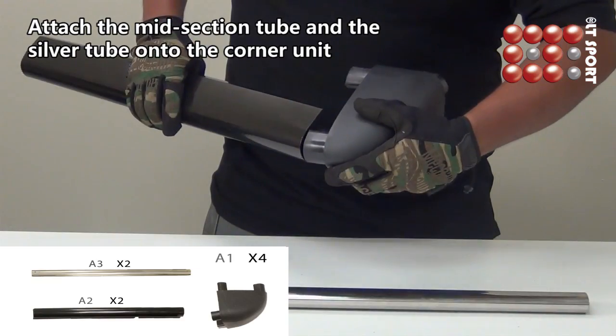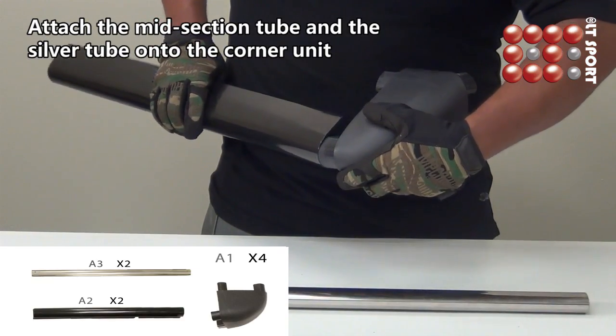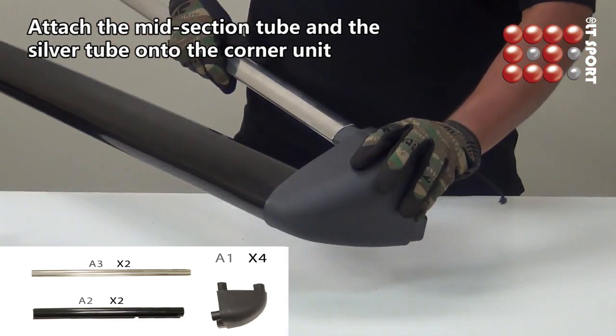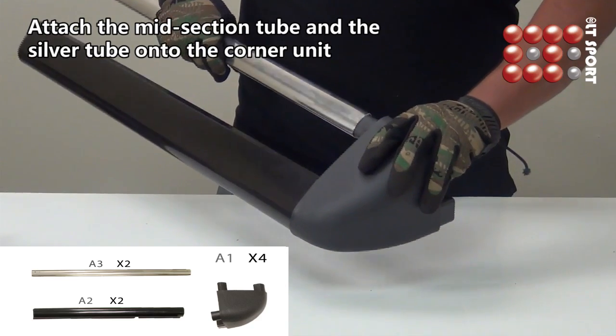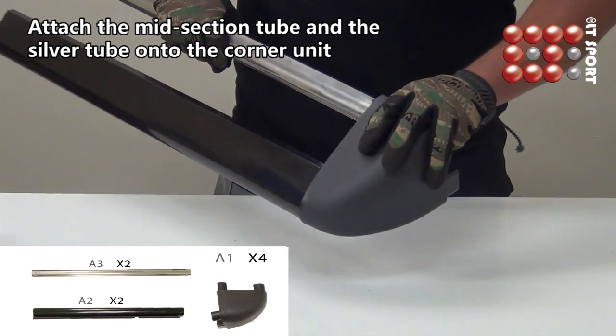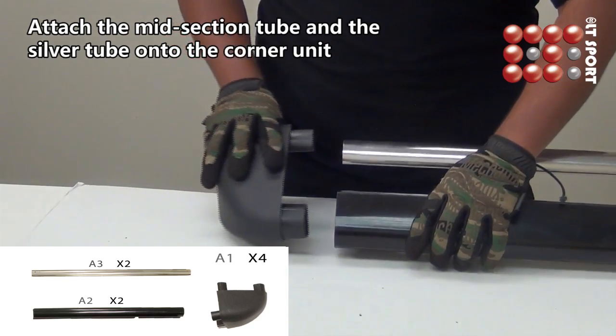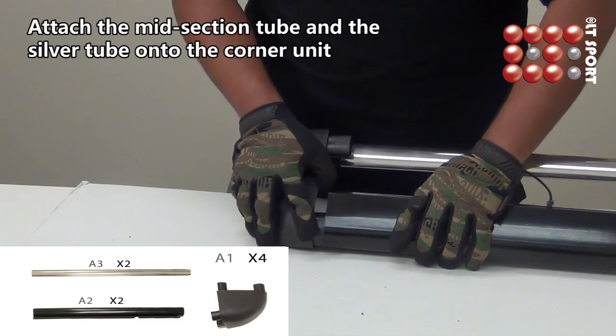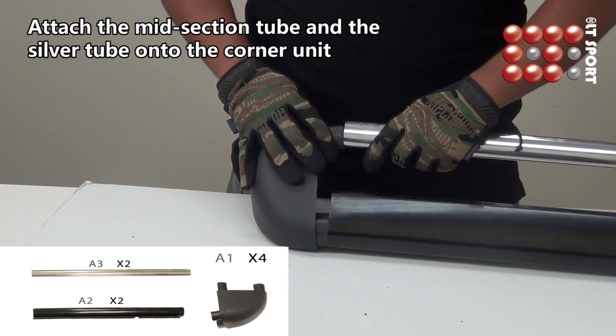First we attach the midsection tube on the silver tube onto the corner unit. On the other side, attach the midsection tube onto the corner unit one-fourth quarter inch in, and then slightly align the silver tube with the corner unit and push in.